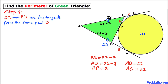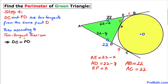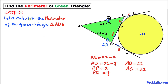Now let's focus on line segments PD and DC. These are two tangent lines from the same external point D. According to the Two Tangent Theorem, these two tangents are equal in length. Since DC is y units, PD is y units as well.